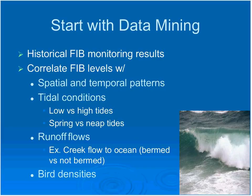You'll also want to correlate levels with runoff flows. For example, in California a creek flowing into the ocean may show higher exceedances when the creek is not bermed and flows directly into the ocean versus when it's bermed — a wall of sand formed by wave action. You should also look at how exceedances correlate with bird densities. In certain parts of California, birds are a real issue, and you may see higher bird density from October through April and want to correlate bacterial levels accordingly.